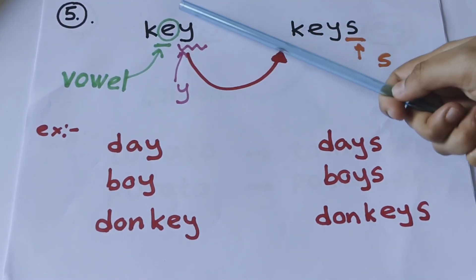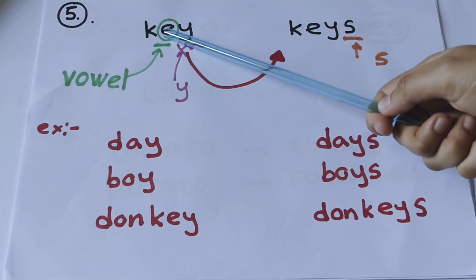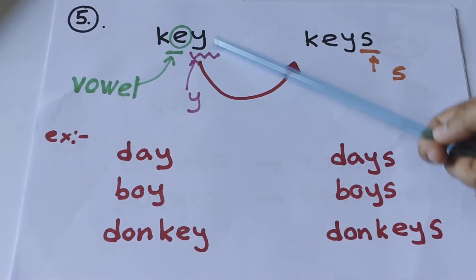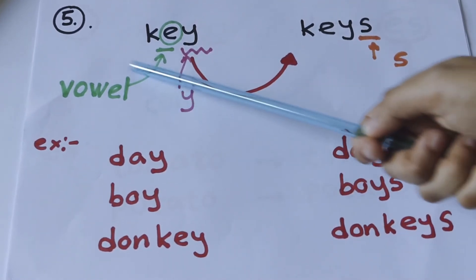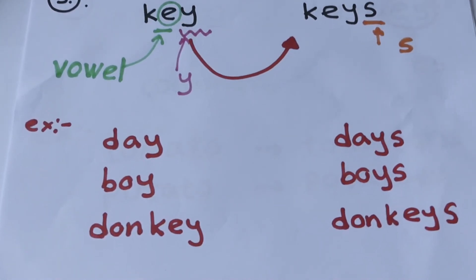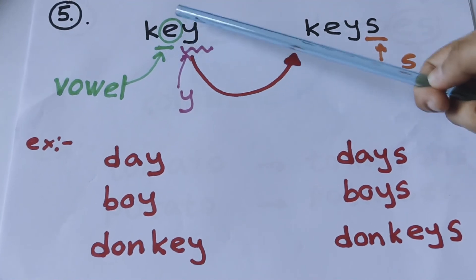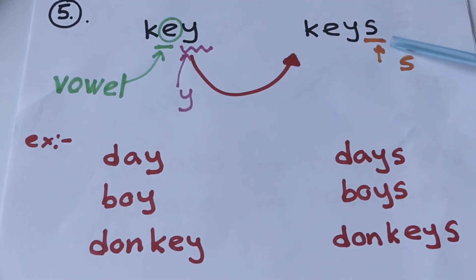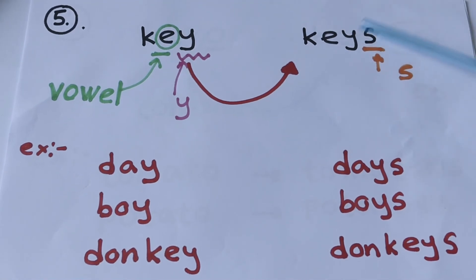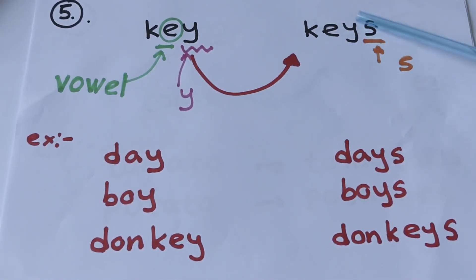Fifth rule: the letter before Y. The last letter finishes with Y and the letter before Y should be a vowel: A, E, I, O, U. Then we have to convert singular to plural by adding S without removing Y.